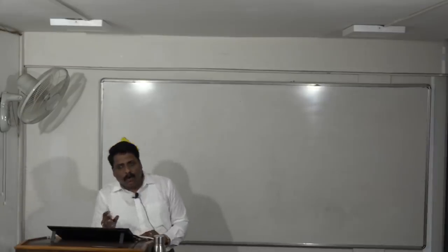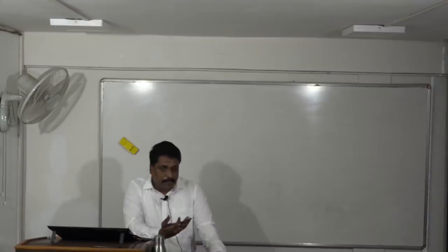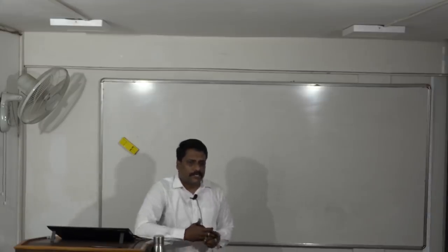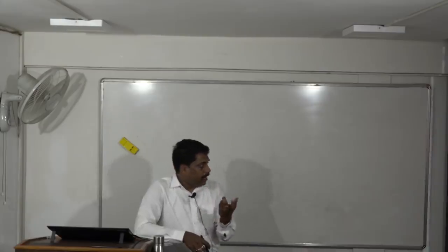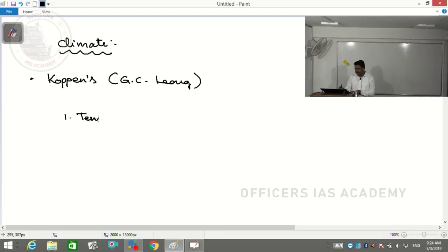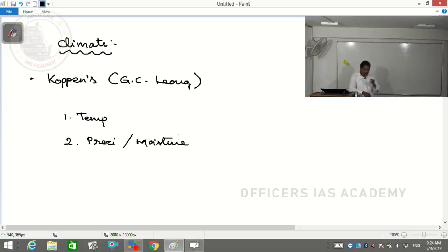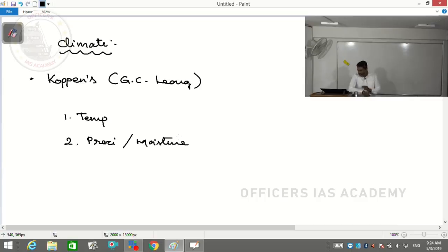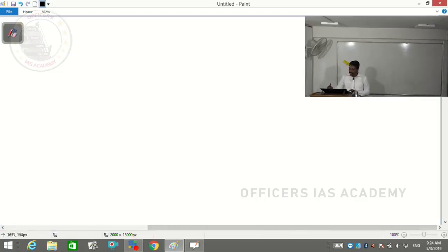Climate is simply an atmospheric condition. When we talk about atmospheric condition, two parameters matter: one is temperature and two is precipitation or resultant moisture. Any climate you take, the primary classification lies with these two parameters. For example, the equatorial type of climate is characterized as hot and humid.